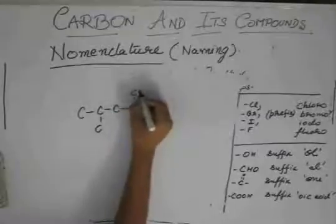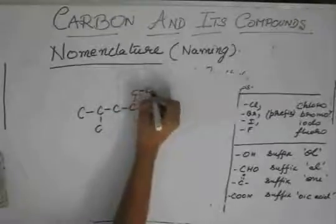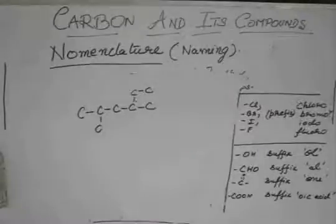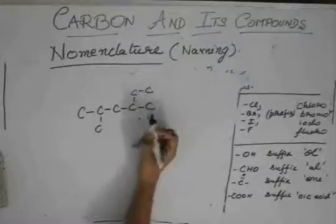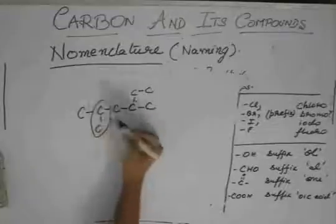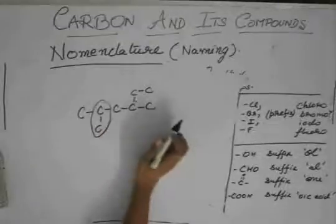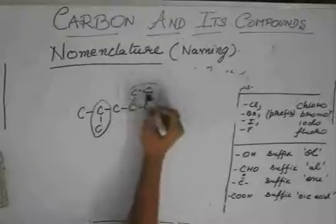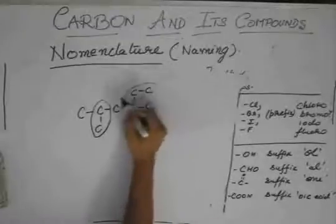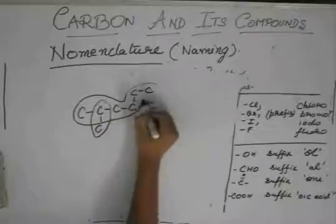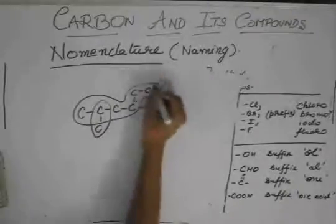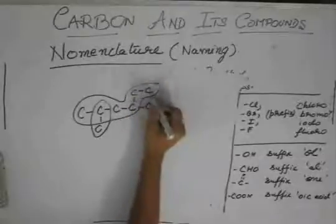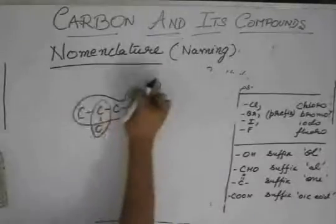Suppose one over here. So, what do we do first? Take the longest chain. Two-membered, not the longest. See, this is not the chain. This is the chain.